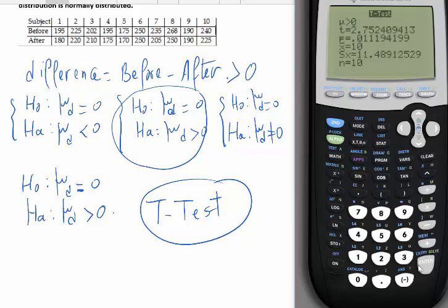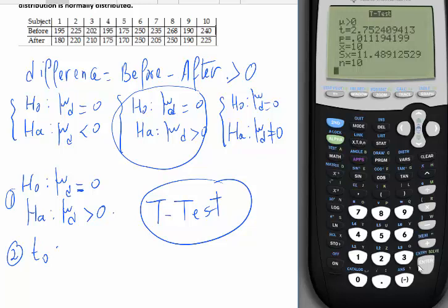So, T0, step number 2. That's step number 1. Step number 2 is, T0 equals 2.752. 3, which is the important one, P-value. What is the P-value here? 0.0011.